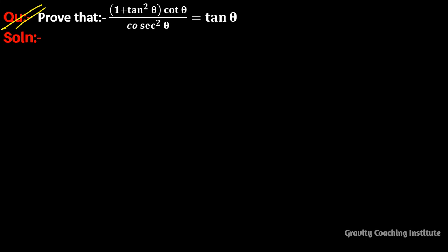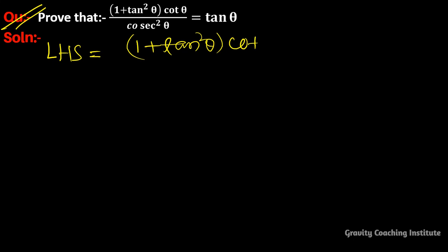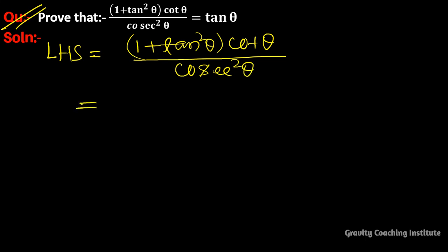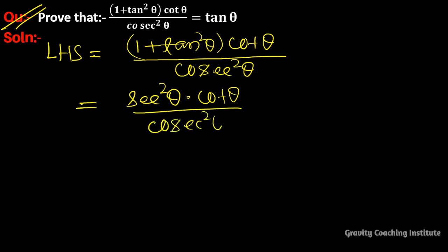Prove that (1 + tan²θ) · cotθ / cosec²θ = tanθ. So LHS is equal to (1 + tan²θ) · cotθ / cosec²θ. We know the formula: 1 + tan²θ = sec²θ, so we have sec²θ / cosec²θ.